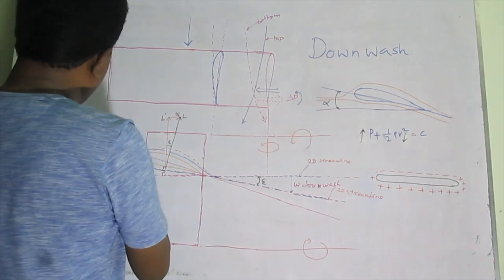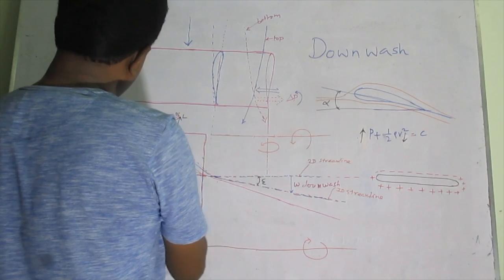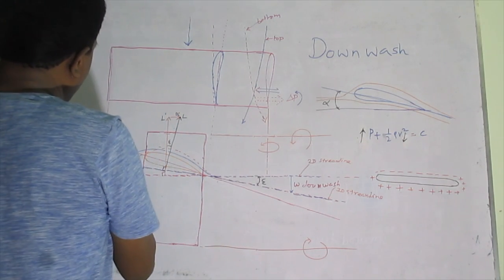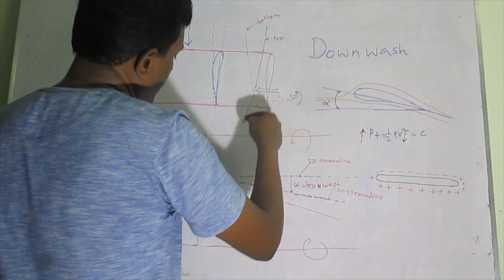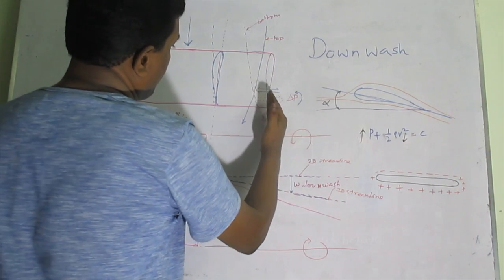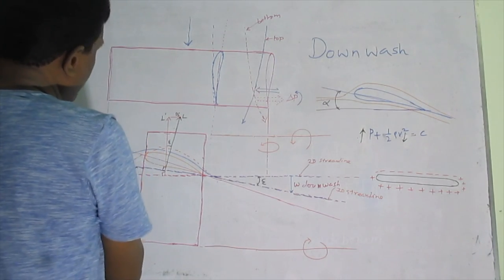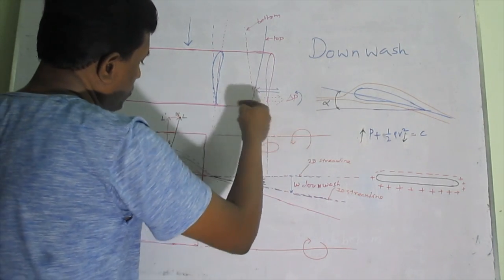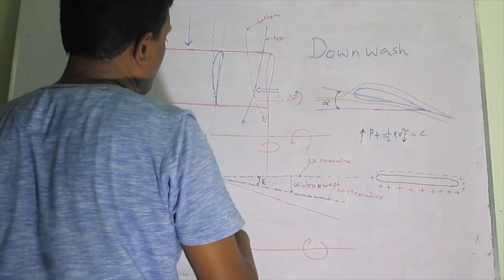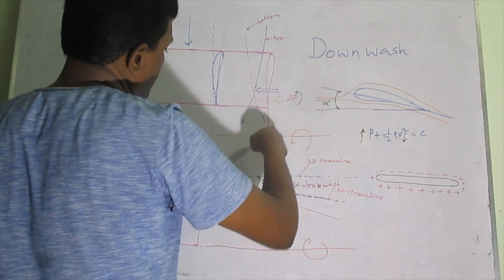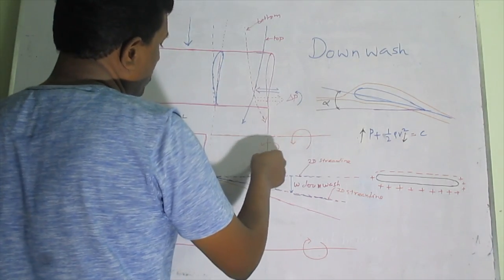Wingtip vortices are created at both wingtips — one vortex on each side. The vortex on one wingtip rotates anti-clockwise and the vortex on the other wingtip rotates clockwise. Both vortices push the flow inwards between the two wingtips.